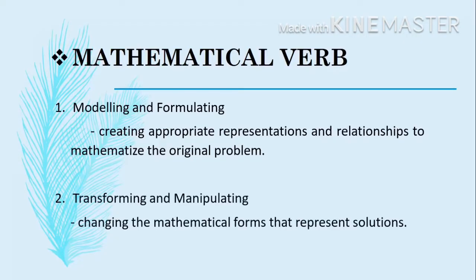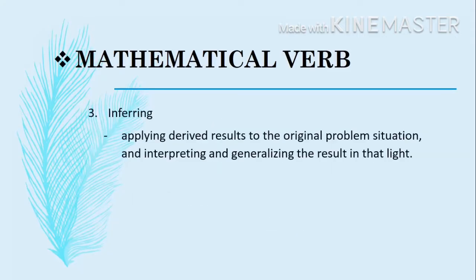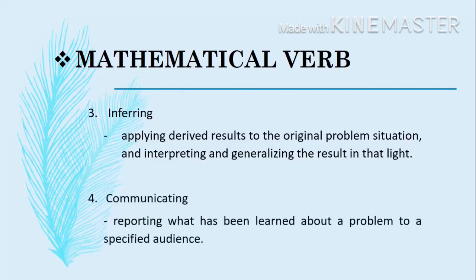For the second one, we have transforming and manipulating, which is defined as changing the mathematical forms that represent solutions. This is where solving takes place until you get to the final answer. The third one is inferring — applying derived results to the original problem situation and interpreting and generalizing the result. In here, we go back to the original question and ask ourselves, did we find the right answer? And lastly, we have communicating — reporting what has been learned about a problem to a specified audience.